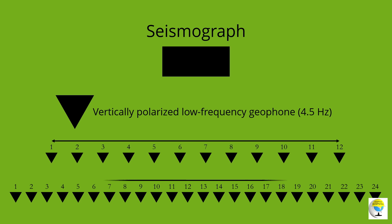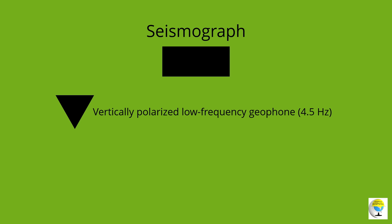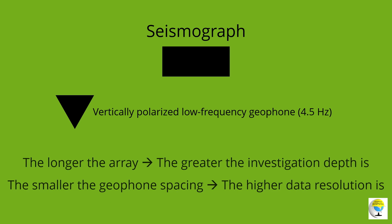The total length of the geophone spread is directly related to the longest wavelength of the surface waves, which in turn determines the maximum depth of investigation. The receiver geophone spacing is related to the shortest wavelength and therefore determines the shallowest resolvable depth of investigation. In general, the longer the array the greater the investigation depth, and the smaller the geophone spacing the higher the data resolution.